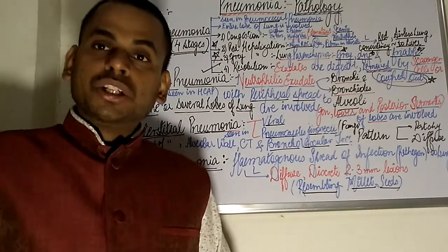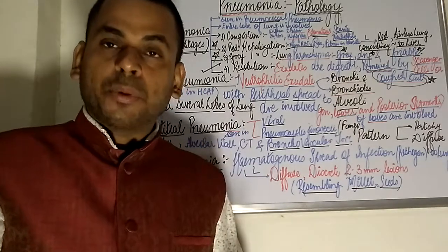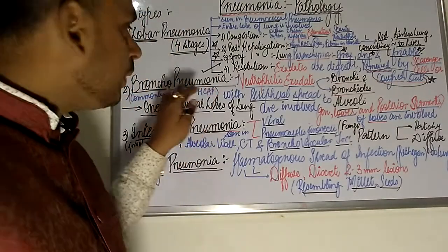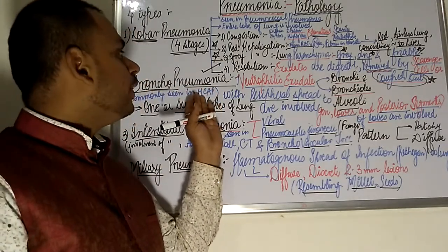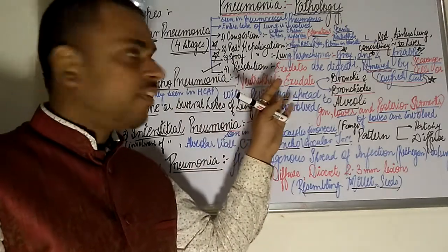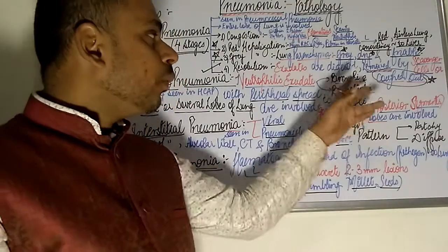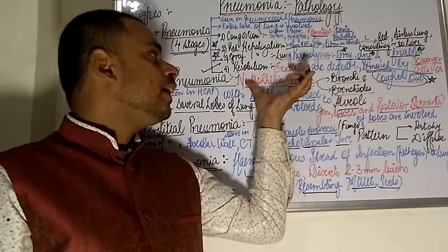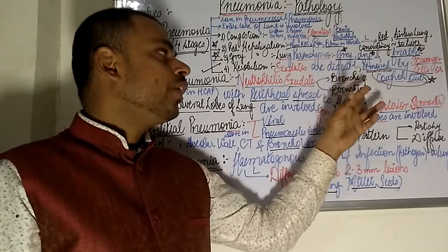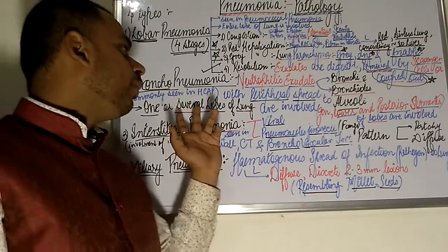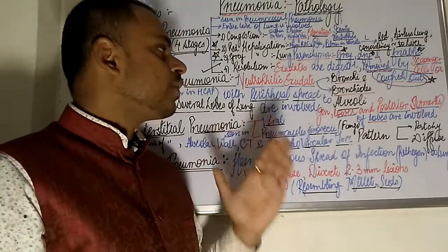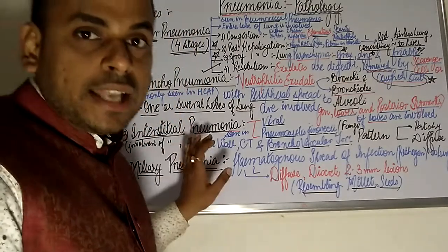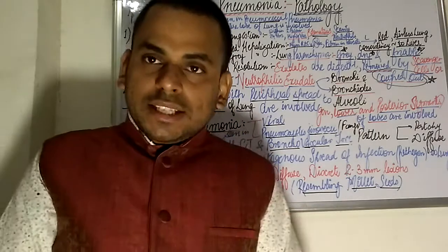Moving on to the next type: bronchopneumonia. Bronchopneumonia is commonly seen in healthcare-associated pneumonia — patients admitted to hospital or given ventilatory support within 24 to 48 hours of admission. In bronchopneumonia, neutrophilic exudates are present not only in the alveoli but also peripherally spreading to the bronchioles and alveoli. One or several lobes of the lung are involved, particularly the lower and posterior segments of the lobes.